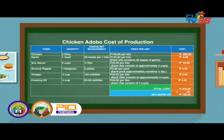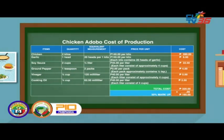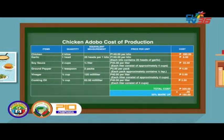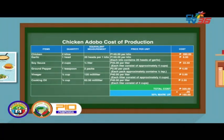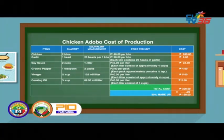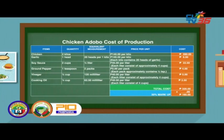For the computation of the cost of ground pepper, vinegar, and cooking oil, follow the steps used in computing the cost of chicken, garlic, and soy sauce. To get the total cost for this chicken adobo recipe, simply add the cost of each item. For the chicken, the cost is 280 pesos. Garlic, 6 pesos. Soy sauce, 22 pesos and 50 centavos. Ground pepper, 4 pesos. Vinegar, 5 pesos. And lastly, cooking oil, 2 pesos and 50 centavos. Therefore, the total cost is 320 pesos.